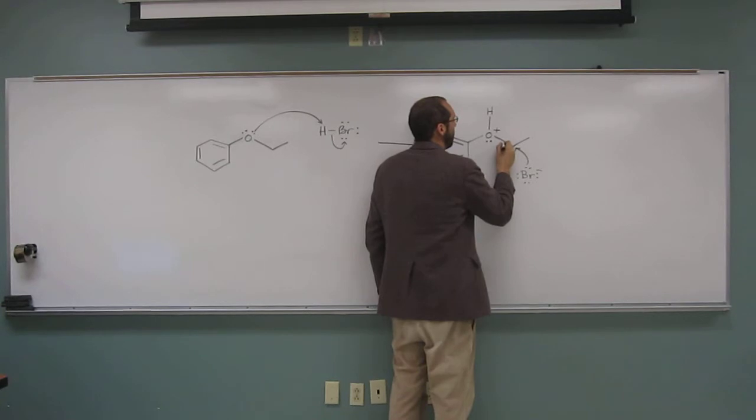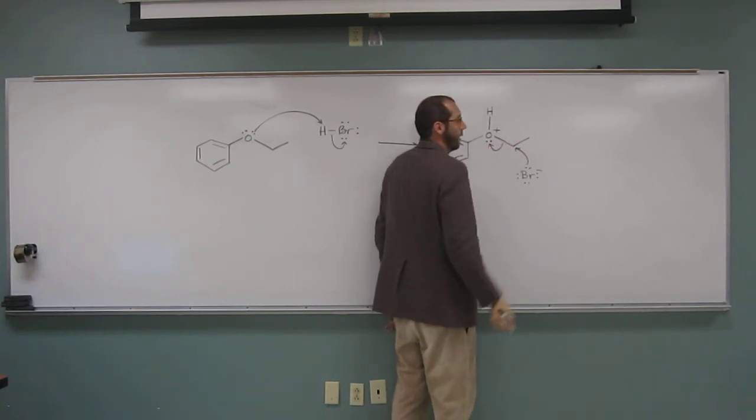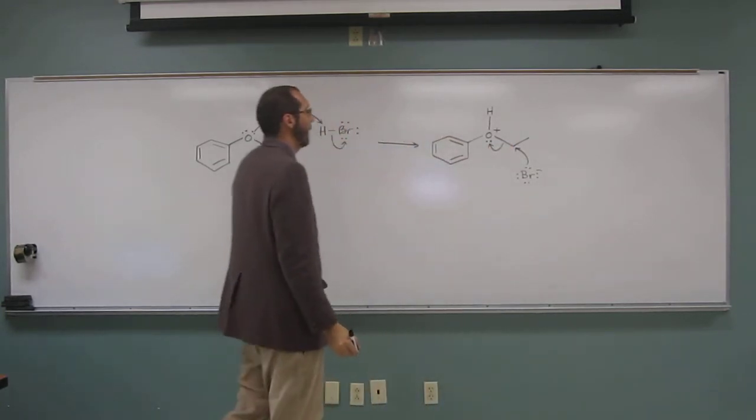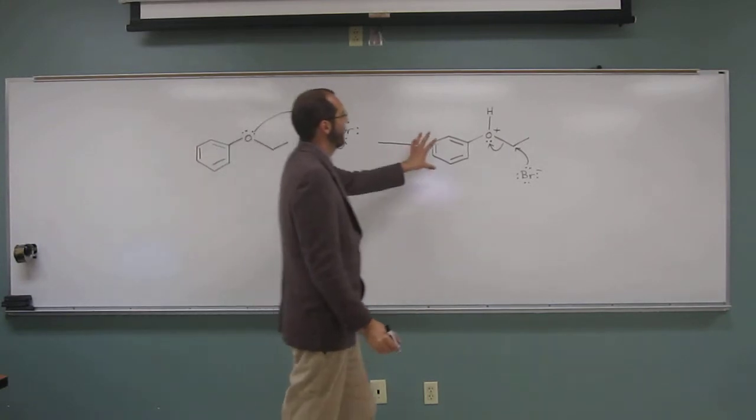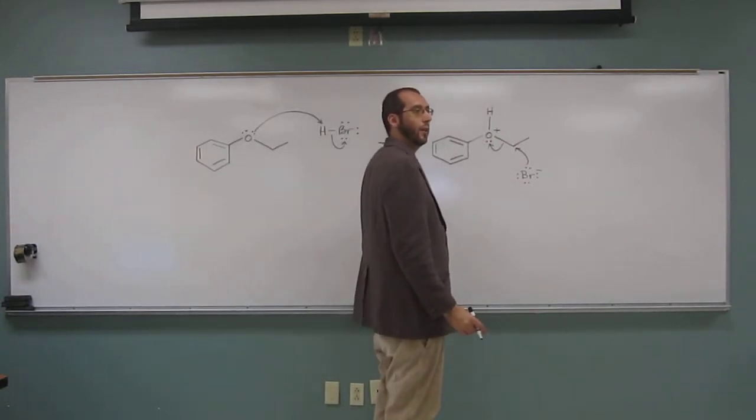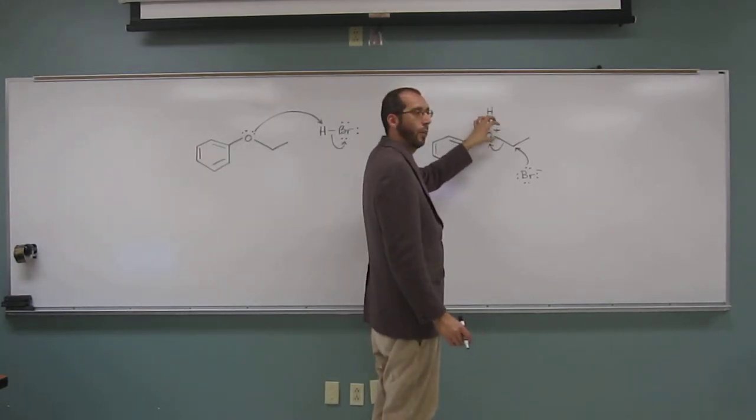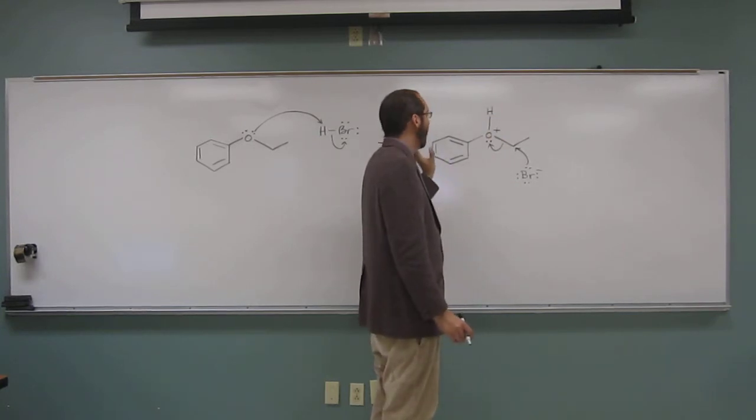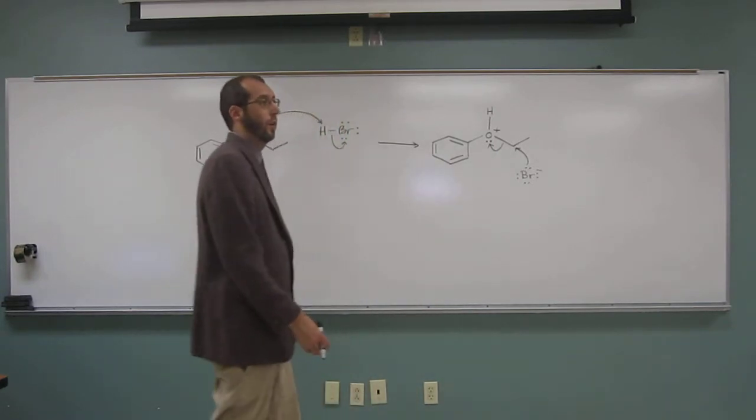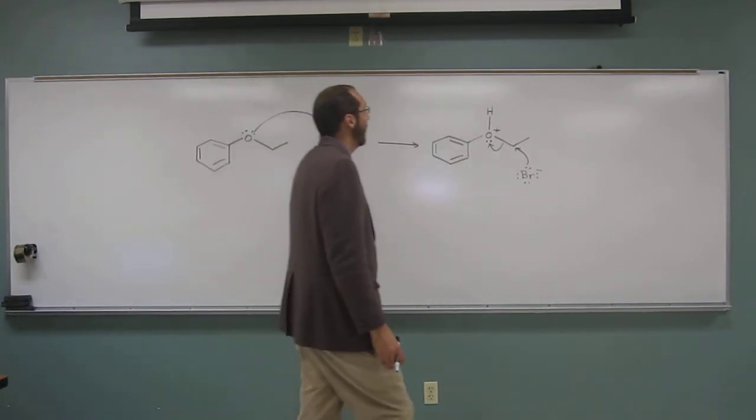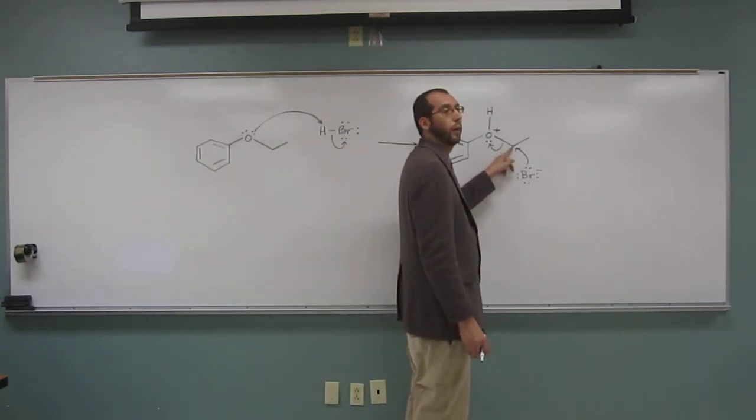That carbon right there, those electrons are going to go to that oxygen there. Remember, this is a good leaving group here. Whenever you can see that good leaving group and it's got a positive charge on it, you know, that's going to leave as like an SN1 or an SN2, okay? So the reason this has to be an SN2 is because it's on the primary carbon.